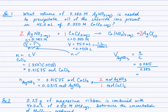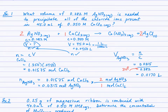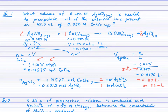We finish with 0.11170 liters. For significant figures: the concentration has three sig figs, and the moles of calcium chloride also came from three sig figs, so the final answer has three sig figs. We round to 0.112 liters or 112 milliliters. So 112 mL of silver nitrate solution at that concentration is required to precipitate all the chloride ions in the calcium chloride sample.